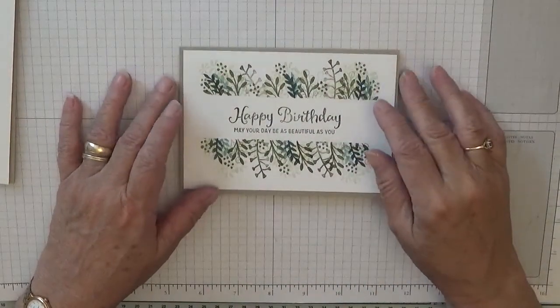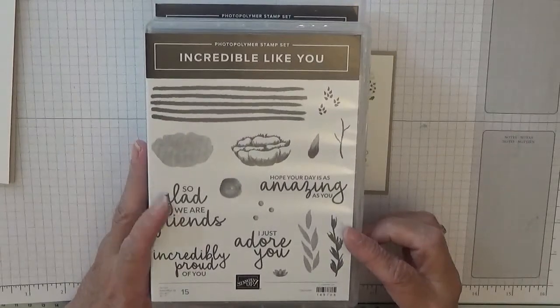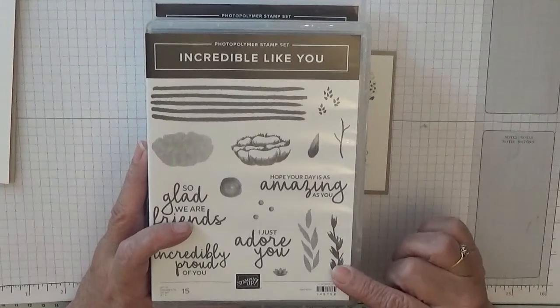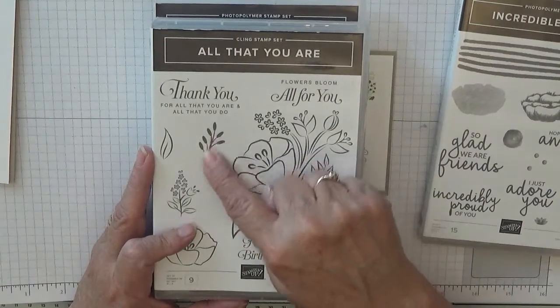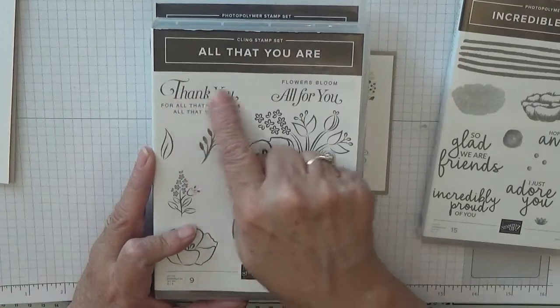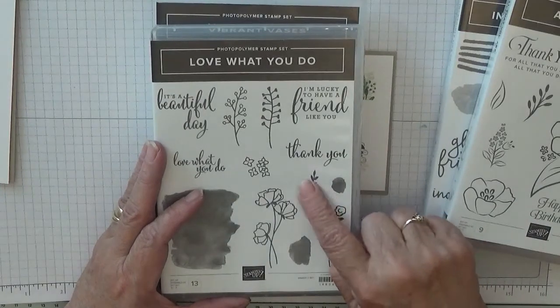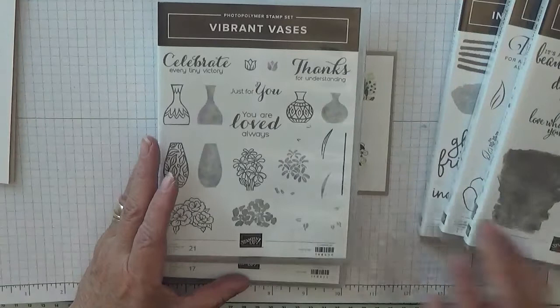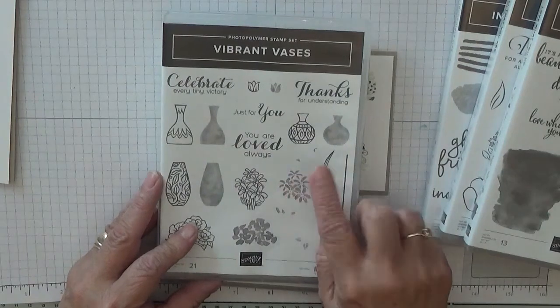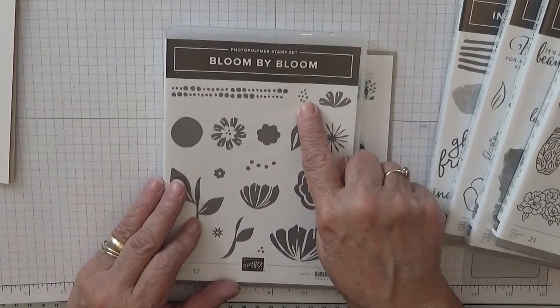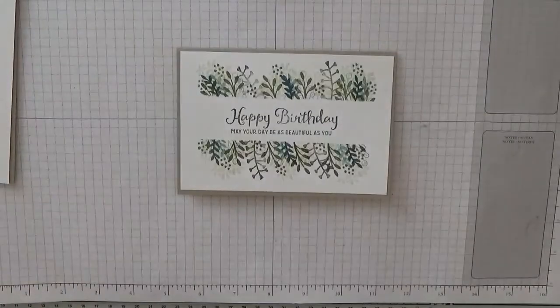So let's start with the stamp sets I've used. Incredibly Like You, I use this stamp here as it's a solid stamp. All That You Are, I use this stamp as it's solid. I also use this sentiment, Love What You Do. I use that leaf quite a lot in my cards. Vibrant Vases, I use those flowers there. I know they're not leaves but they look nice. And Bloom by Bloom, I use those dots.